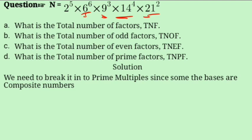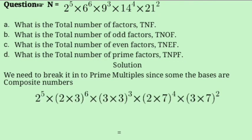We break the composite bases into prime multiples. So: 6 = 2 × 3, 9 = 3 × 3, 14 = 2 × 7, and 21 = 3 × 7. Now all bases are prime.